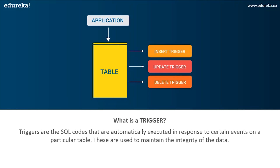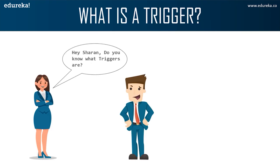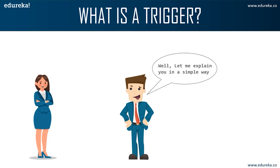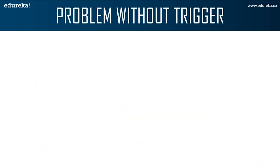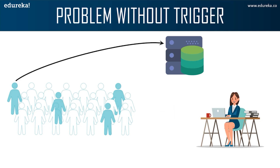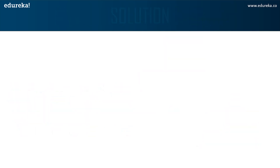Let's try to understand it in a better way. Here we can see Anna is asking Sharon about triggers. Sharon imagines a trigger as falling dominoes. Anna is a marketing officer in a company. When new customer data is entered into the company's database, she has to send a welcome email to each and every new customer. If it is one or two customers Anna can do it manually, but what if the count is more than a thousand? It will be a repetitive and tiring job and the efficiency of Anna may drop.